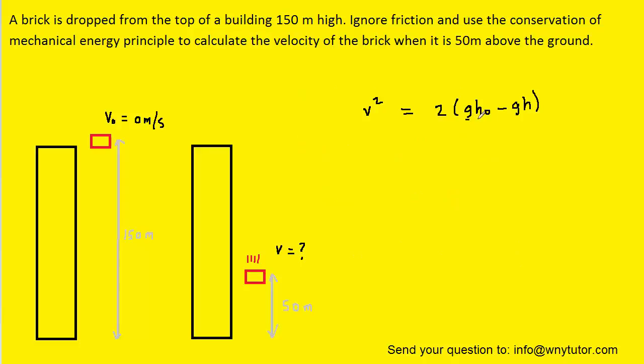Now, on the right side, since we have g both here and here, we can actually factor it out. And then finally we can take the square root of both sides of the equation so that we can isolate v.